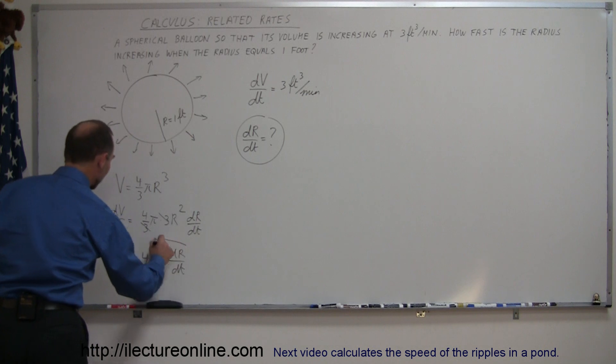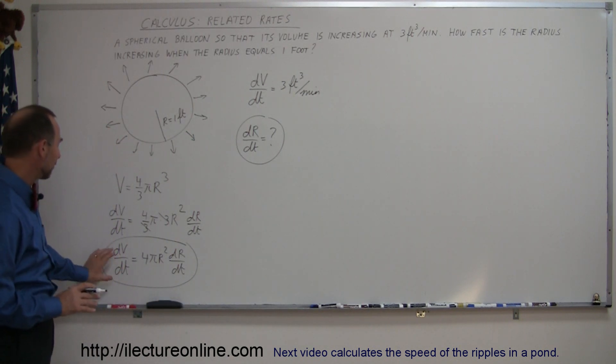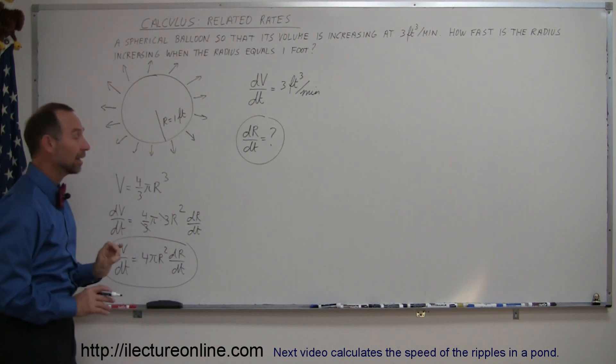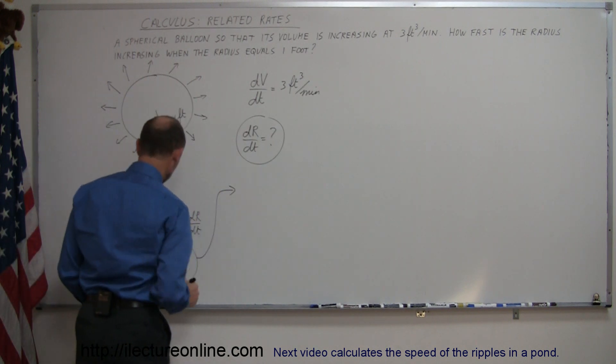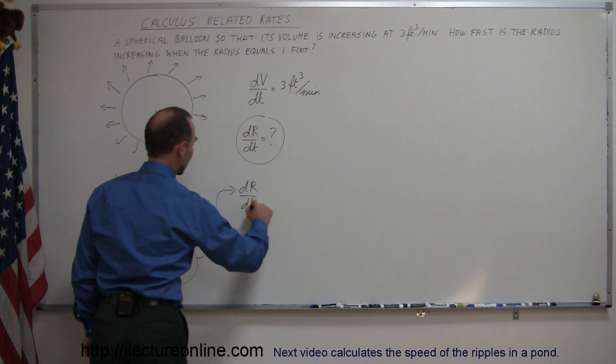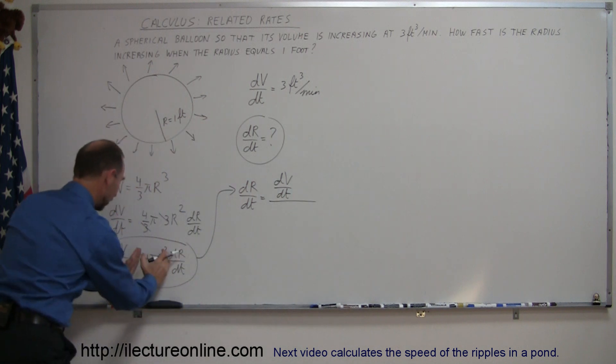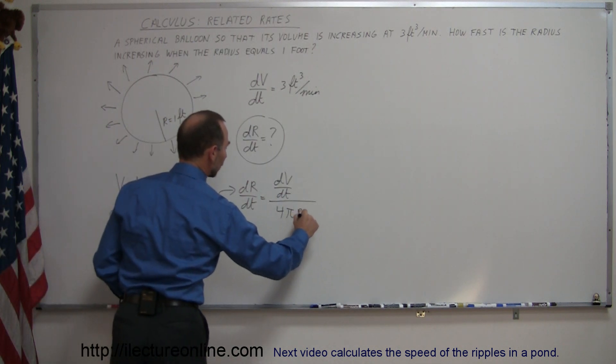So now you can see that with this equation, with finding the derivative of the equation with respect to time, we now have a relationship between dV/dt and dr/dt. So now let's solve this equation for dr/dt. So dr/dt, according to this equation, is equal to dV/dt divided by, when I take all this and move to the other side, 4πr².